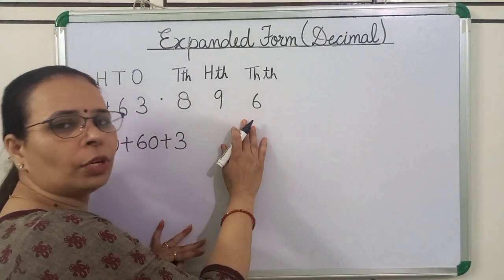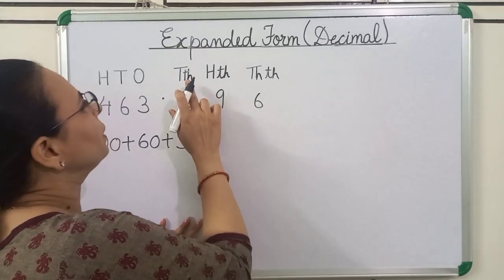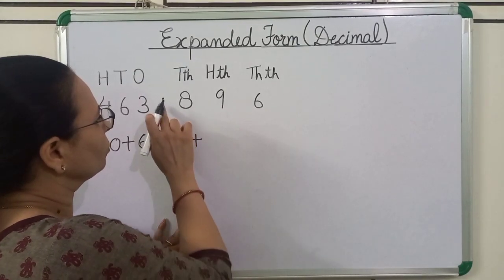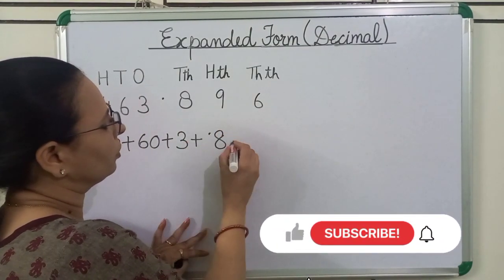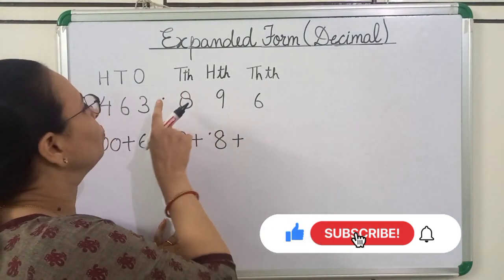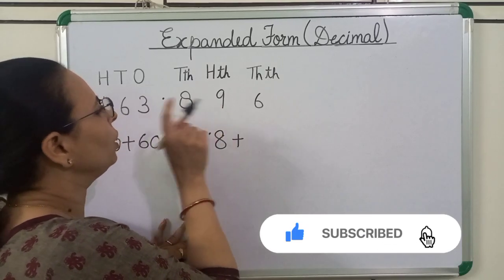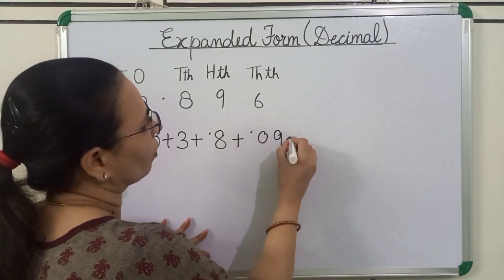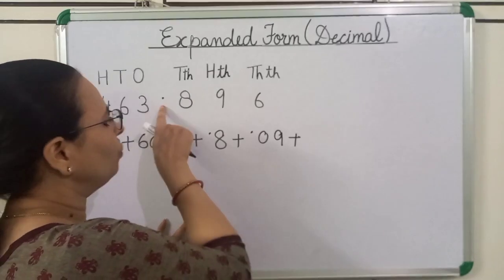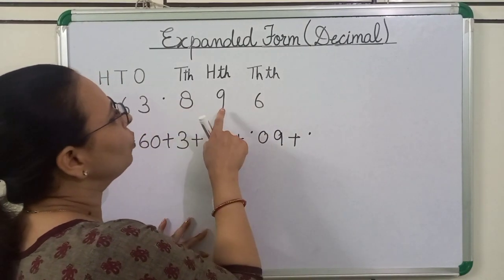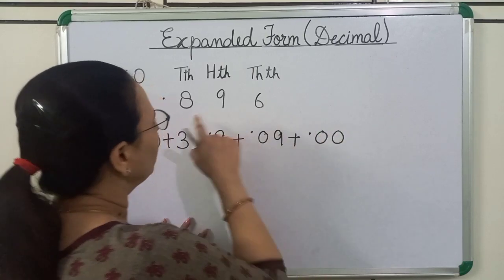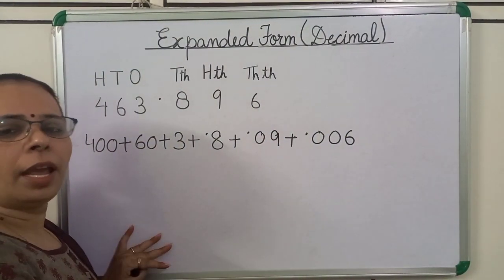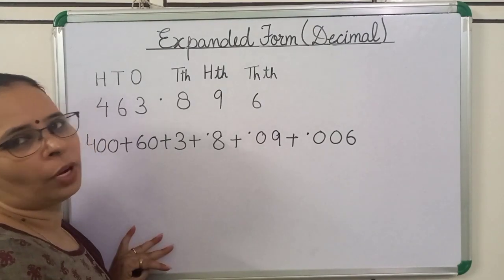The places of decimal part digits are 10th, 100th, and 1000th. So first we will write 0.8. Next number is 9, so we will write 0.09 — at the place of 8, we will write 0. Next number is 6, so we will write 0.006 — at the places of 8 and 9, we will write 0. This is the decimal form of expansion.